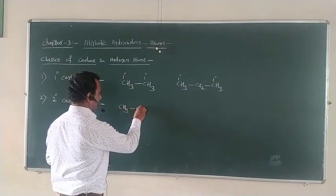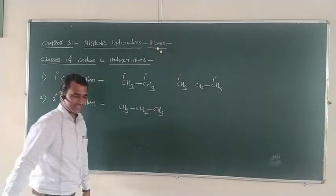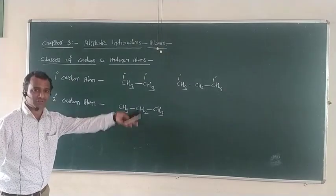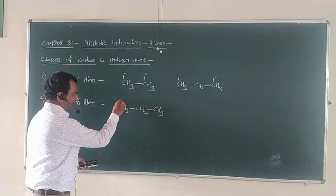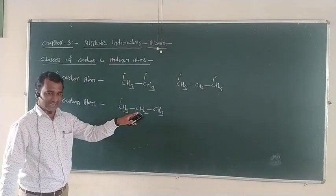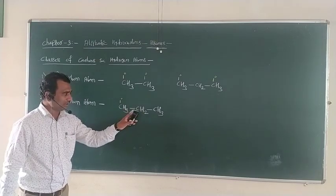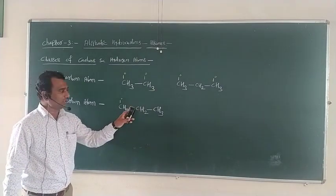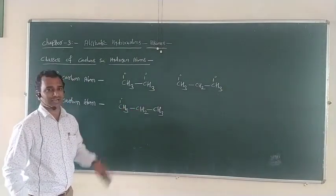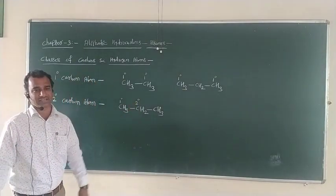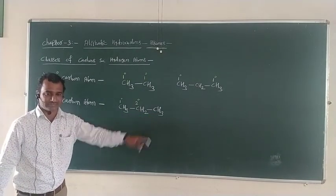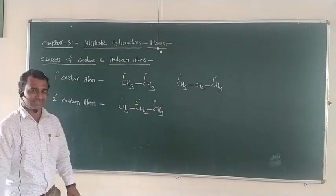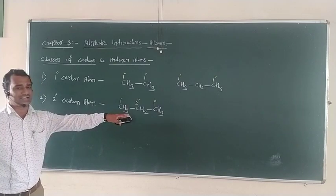In propane (CH3–CH2–CH3), the first carbon is attached to only one other carbon atom, so it is a primary carbon atom. The second (central) carbon is attached on the left to one carbon and on the right to another carbon — so it is attached to two other carbon atoms, making it a secondary carbon atom. The third carbon is attached to only one carbon atom, so it is again a primary carbon atom.